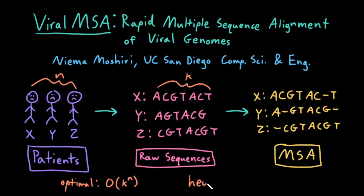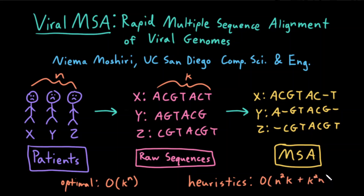Heuristics have been developed that can solve this problem, at least heuristically, much faster. Currently, most of these heuristics are O of N squared K plus O of K squared N. This is a much better step in the right direction, but unfortunately for the case of COVID-19, this N squared term is still far too large.